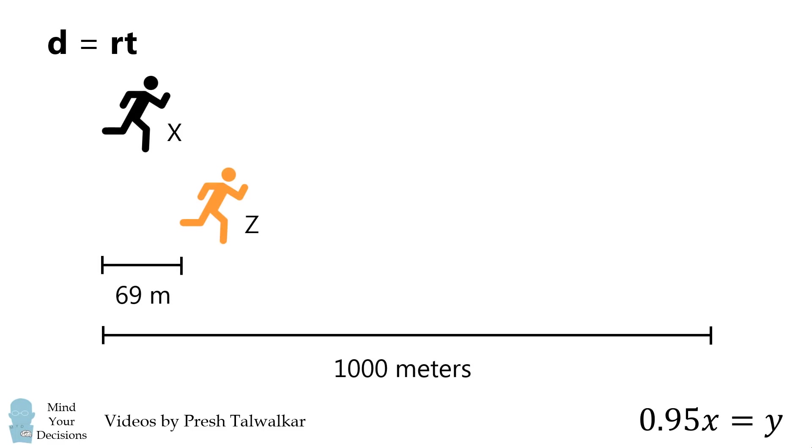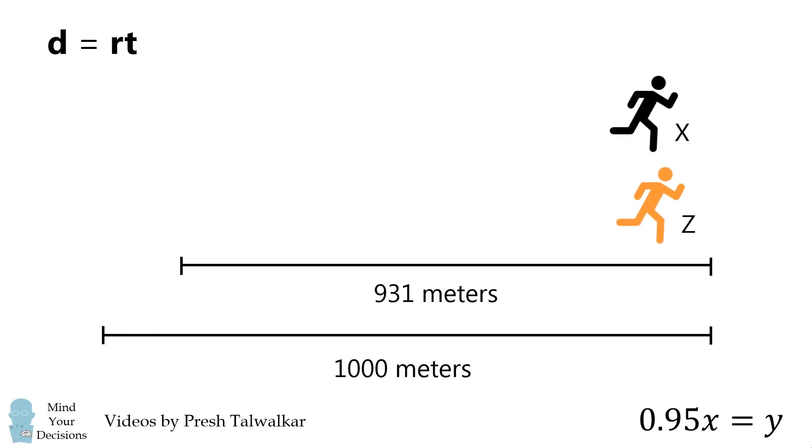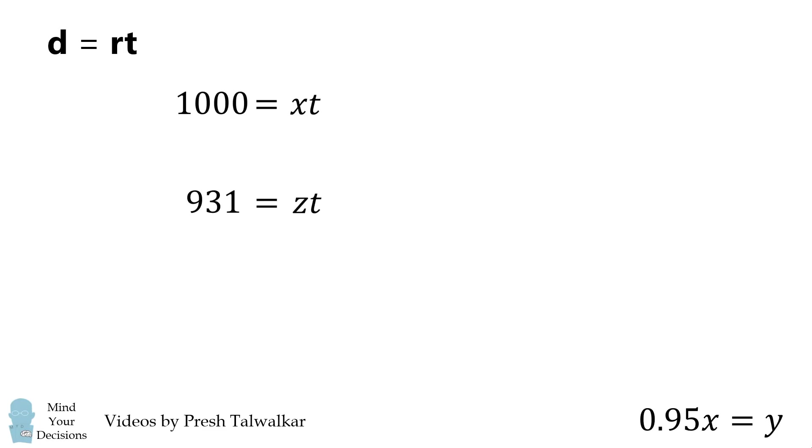We'll set that aside and do the same calculation for Z. Z has to run 931 meters. Now we could just go ahead and say that Z = 0.931X, but we'll go ahead and do this the slow way.